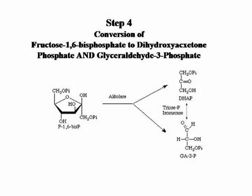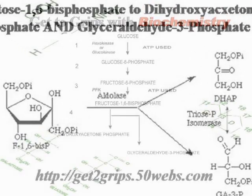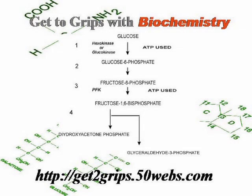The fourth step is the splitting of the six carbon substrate fructose-1,6-bisphosphate into two three-carbon products: dihydroxyacetone phosphate and glyceraldehyde-3-phosphate. The enzyme that catalyzes this reaction is called aldolase. Note that the two three-carbon products are isomers of each other and can be interconverted by the enzyme triose phosphate isomerase. That's a summary of the important steps in the first part of glycolysis. Free chapters of the e-book Get to Grips with Biochemistry covering energy metabolism, carbohydrates, and lipids can be downloaded from the website address on the slides.